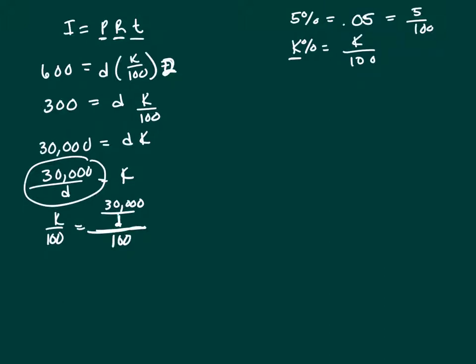So this D in the denominator makes it complex. Let's multiply the numerator and the denominator by D. Those D's cancel. So I'm left with 30,000 over 100D. And we can cross out some zeros. That's going to be 300 over D.